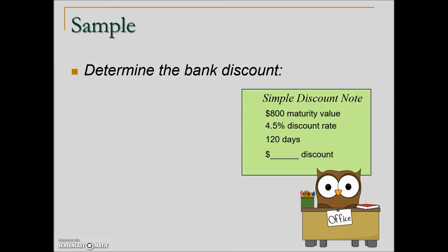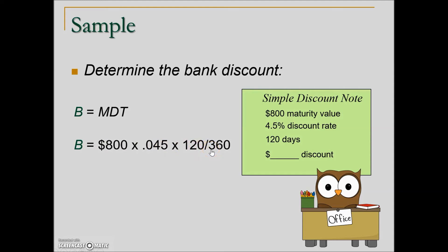This next example asks us to calculate the discount. We're given a maturity value of $800, a discount rate of 4.5%, and a term of 120 days. To find the bank discount B, we take the maturity value $800, times the rate expressed as a decimal, times the time in terms of years — dividing days by 360. That results in a $12 interest charge, referred to as the bank discount.